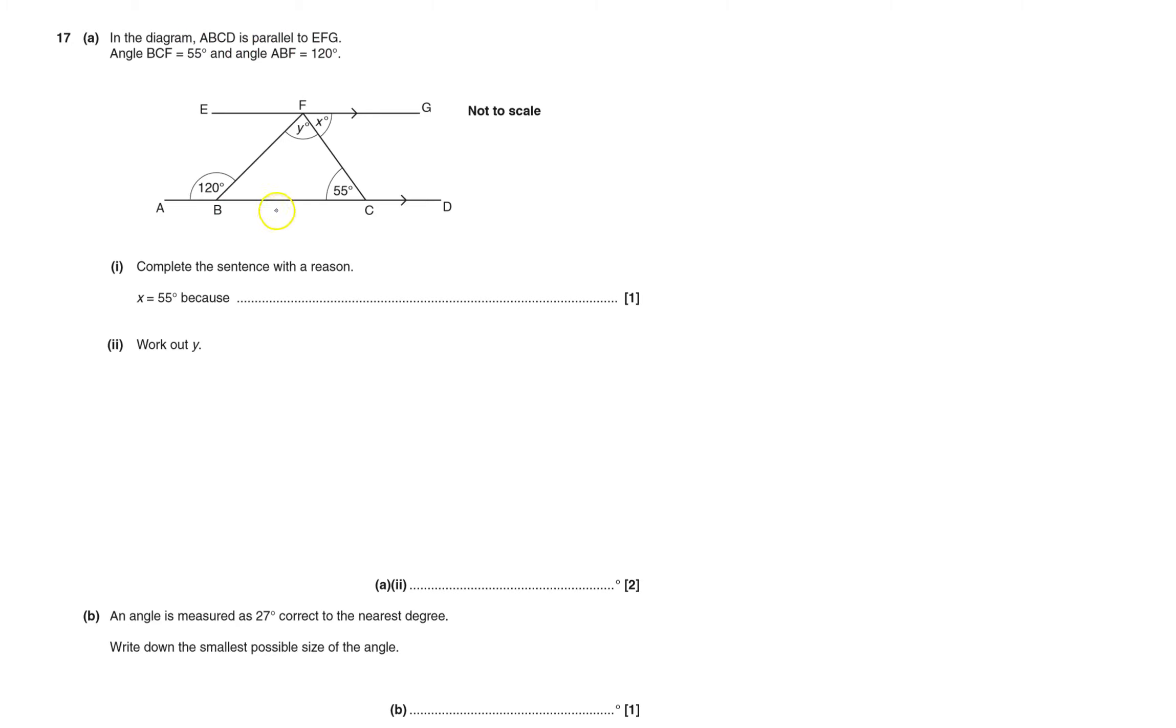Diagram ABCD. This line here is parallel to EFG. Well, it's got a line, an arrow on it to show it's parallel. It says the angles, this one's 55 degrees, that one's 120 degrees. Complete the sentence with a reason. X equals 55, that's true because it's this one.